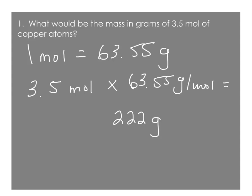Now for significant figures, we are always going to round to the same number of significant figures that we started with. So here we have 3.5, that's two significant figures, so I'm going to round this to 220 grams. And that will be my final answer.